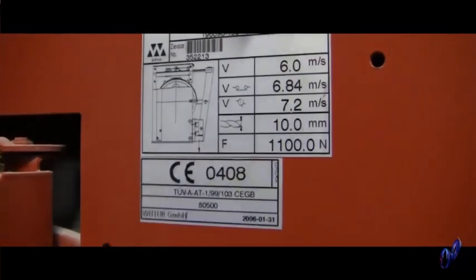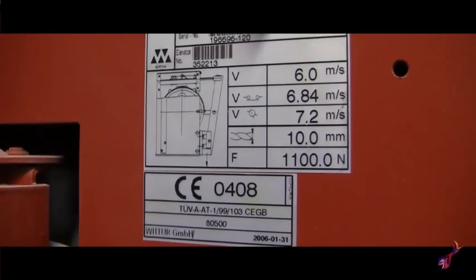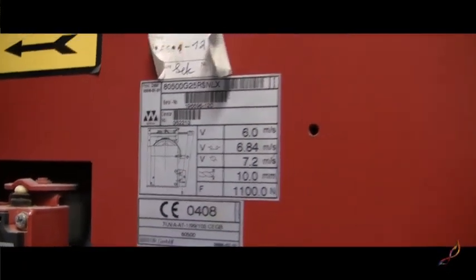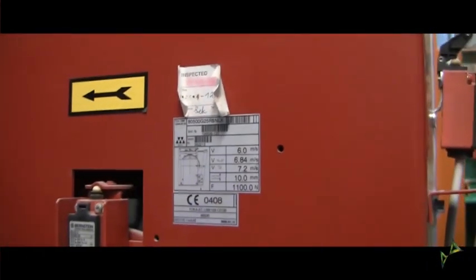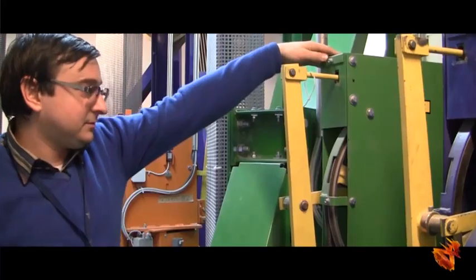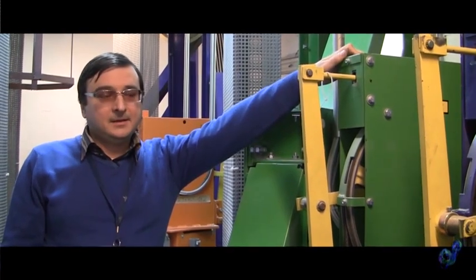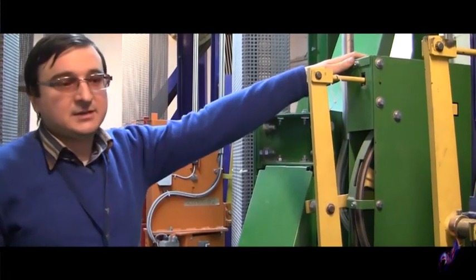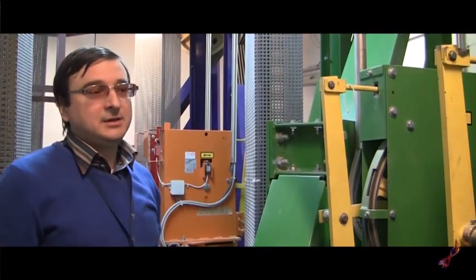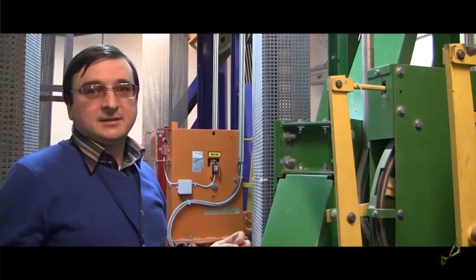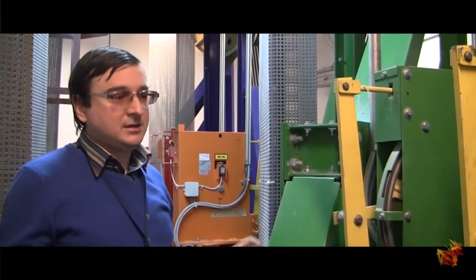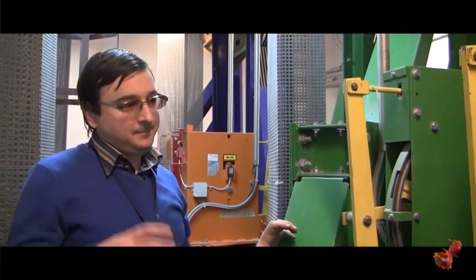With over-speed or a cable brake, this device is engaged and it stops the cabin with a system of cables and catches. The cams or wedge assemblies cut into the guardrails and the cabin stops until a mechanic comes and lets the passengers out.